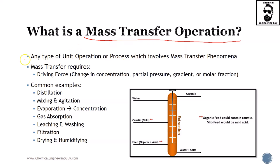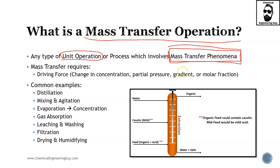So what is formally a mass transfer operation? It's any type of unit operation or process by which you will have a mass transfer phenomenon occurring. Now, if you remember from your transfer phenomena classes, in order for mass transfer phenomena to exist, you're going to have an exchange or driving force related to mass. There must be a driving force, which can typically be measured in changing concentrations, changing partial pressure, gradients, or molar fractions, and so on.